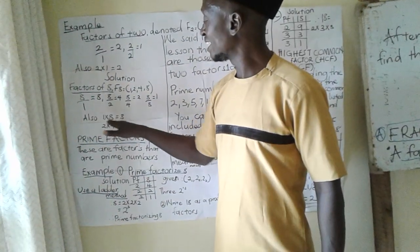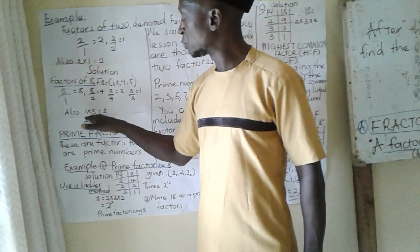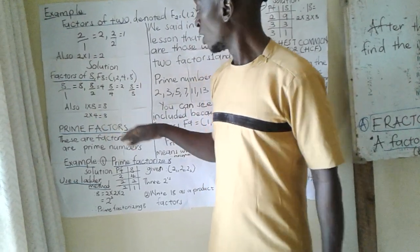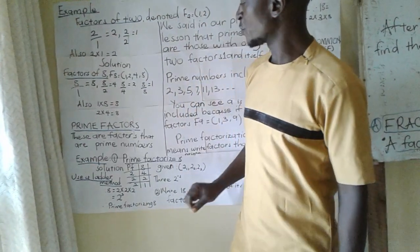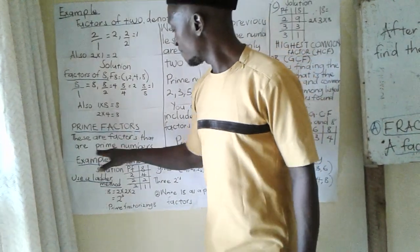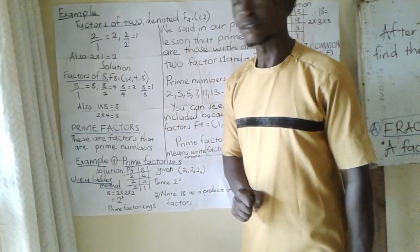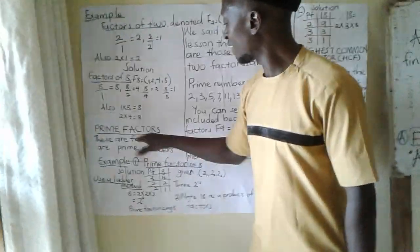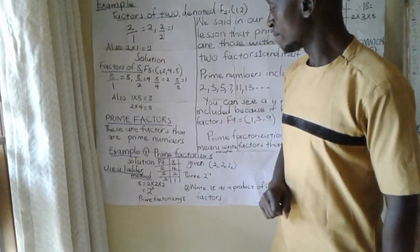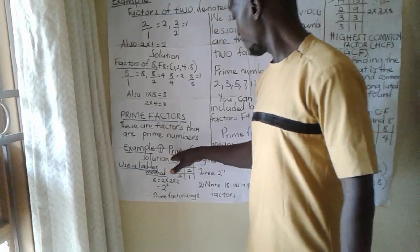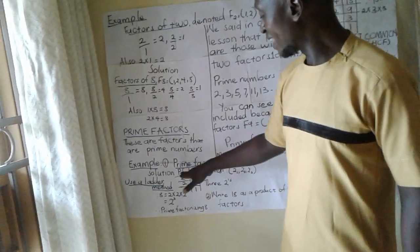Also, somebody can get 8 by saying 1 times 8 is 8, and 2 times 4 is 8. What do they mean when they say prime factors or prime factorize? The prime factors are the factors that are prime numbers. For example, when they say prime factorize 8, we can use our ladder method.